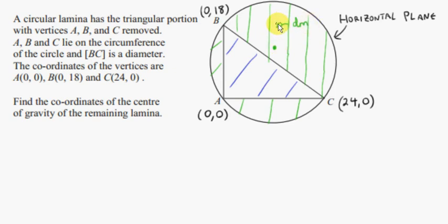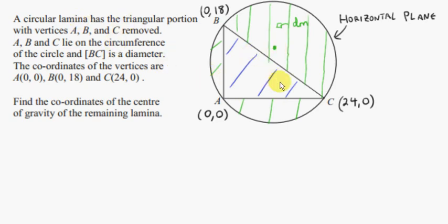We take each tiny mass dm, get its weight dm times g, and find the moment of its weight about the center of gravity — doing this for all mass increments. If we sum all of them about this point, we get zero, if this point is the center of gravity of just the green part. To find this point, we need the center of gravity of the triangle and the center of gravity of the entire system — the circle consisting of the green part and the blue triangle.